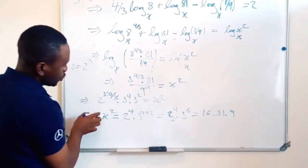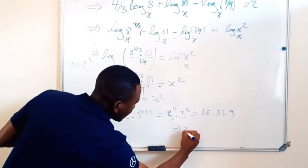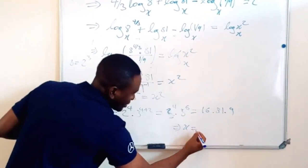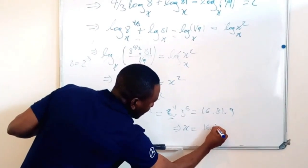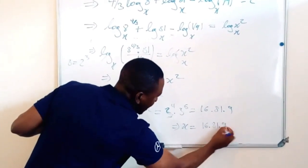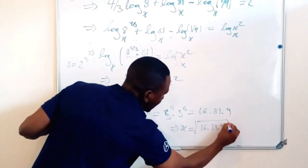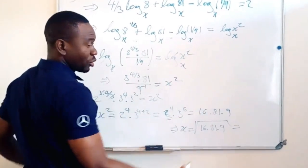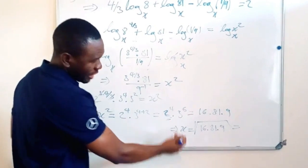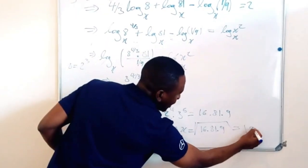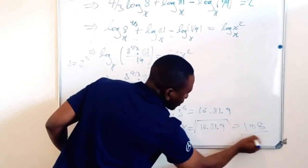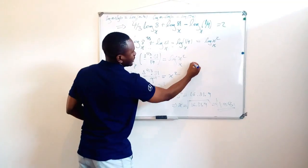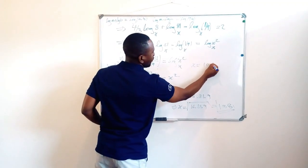This is equal to x squared. So now, x is equal to the square root of 16 times 81 times 9. We know what that means. We all know how to use a calculator. So that one will be equal to 108.